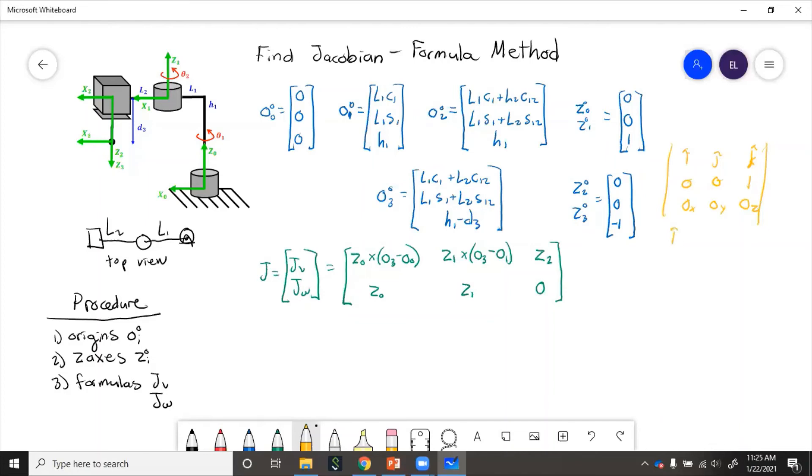So this comes out to be. So then we can just plug those into here. So z0 cross with o3 minus o0, well, o3 minus o0 is just o3 because o0 is zero. So if we plug those in, we'll have the minus y and then x.